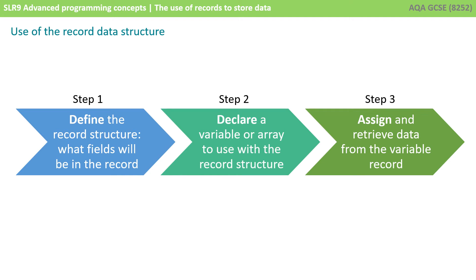There are three steps to be able to use the record data structure if your language supports it. First, you define the record structure — in other words, you tell the program what fields are going to be in it. Second, you declare a variable or an array to use the record structure. And then finally, we can assign and retrieve data from the variables inside the record.